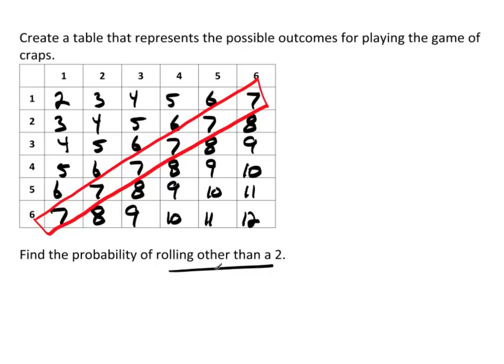So I said, find the probability of rolling other than a 2. Well, you notice that there's 36 different things here, 6 times 6. There's 36 different combinations here. So that means my n(S), the number in my sample space, is 36.